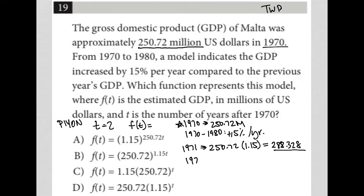So in 1971, that's the GDP value. So in 1972, it should be the value from 1971, 288.328, times another 1.15, an additional 15% increase. So I'll go to my calculator, multiply that number by 1.15, and I get 331.5772.